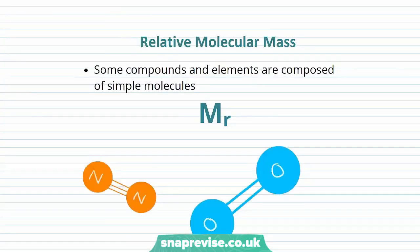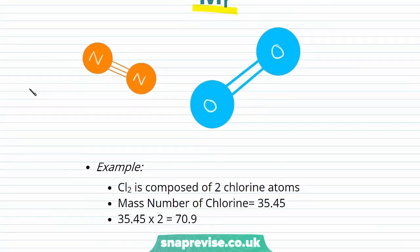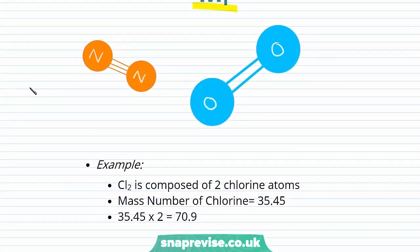Now let's move on to relative molecular mass. Some compounds and elements are composed of simple molecules, such as oxygen and nitrogen, which are diatomic — two oxygens or two nitrogens bound together. We use Mr to represent molecular mass. Chlorine is a gas and is also diatomic, so Cl₂ is composed of two chlorine atoms. The relative atomic mass of one chlorine atom is 35.45, so the relative molecular mass of Cl₂ is 35.45 × 2 = 70.9.